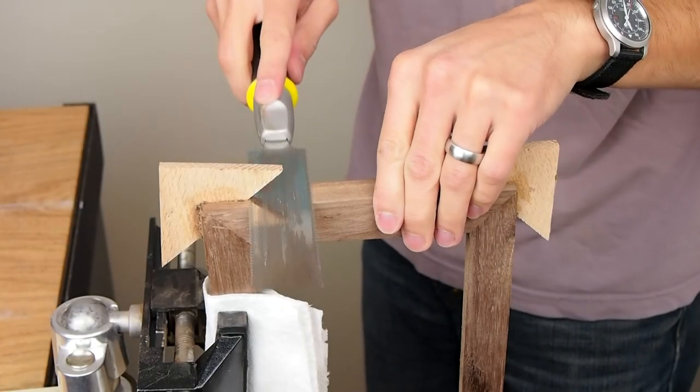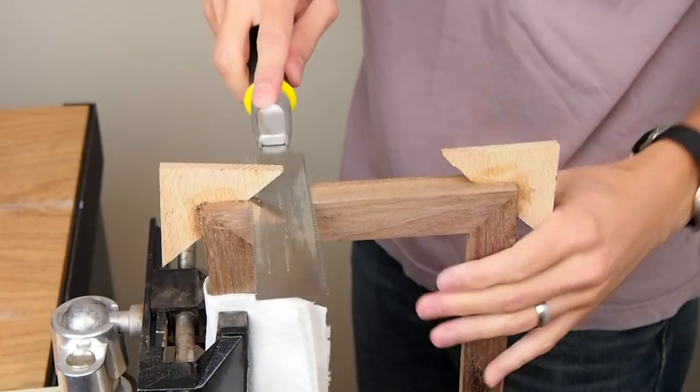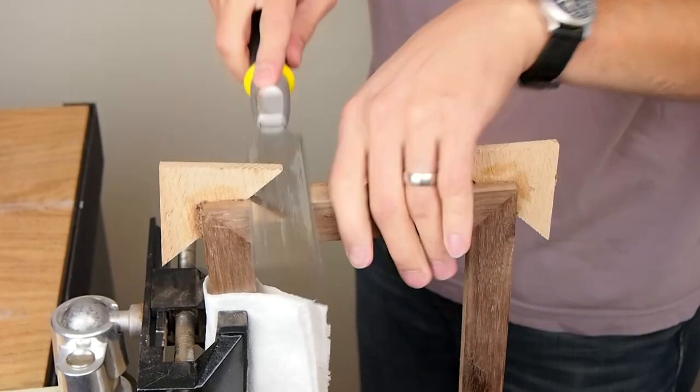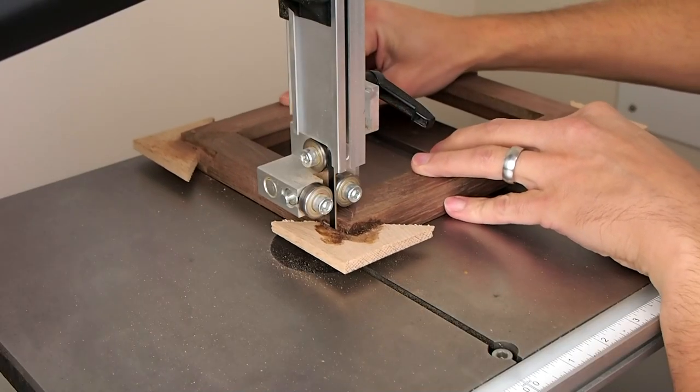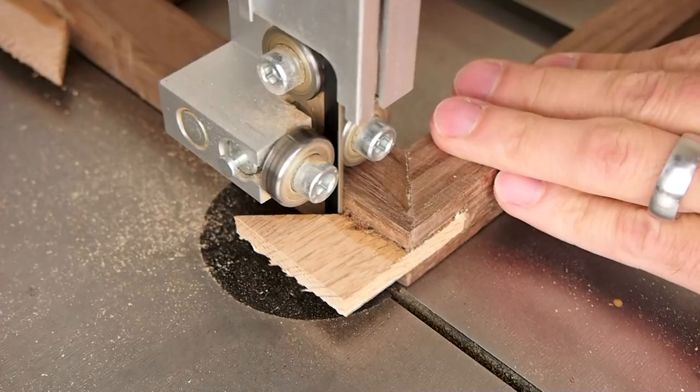I tried cutting the excess off of the triangles with a flush cut handsaw but that was taking too long, so I switched over to the bandsaw. And that went much faster.